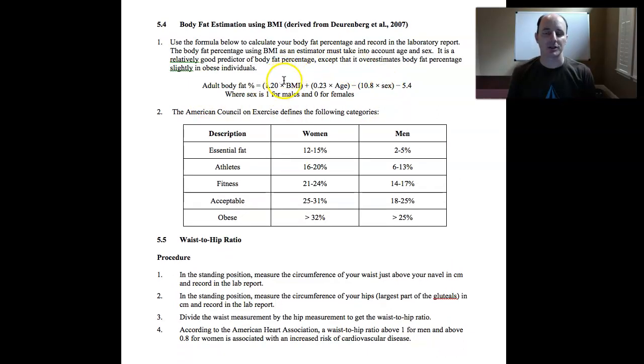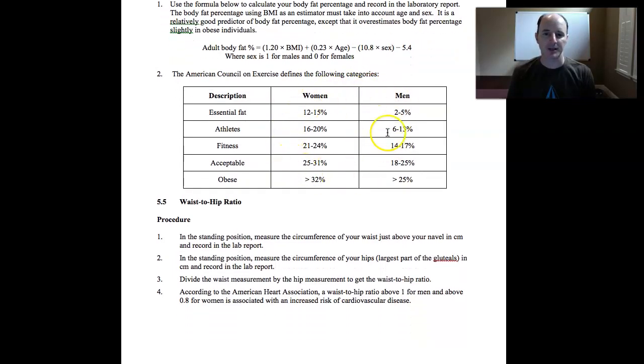Once you know your BMI, then you can do this calculation for body fat estimation. So you plug in your BMI into this equation. The only big difference for this equation for male and female is the value that you put in for sex. For sex, for males, you put in a value of one. Females, you put in a value of zero. Basically what that does is that allows males to subtract an extra 10.8%. Females have to leave that 10.8% in. And that's because females have a higher body fat percentage than males do. So make sure that you correct for gender and then you can compare yourself to the table.